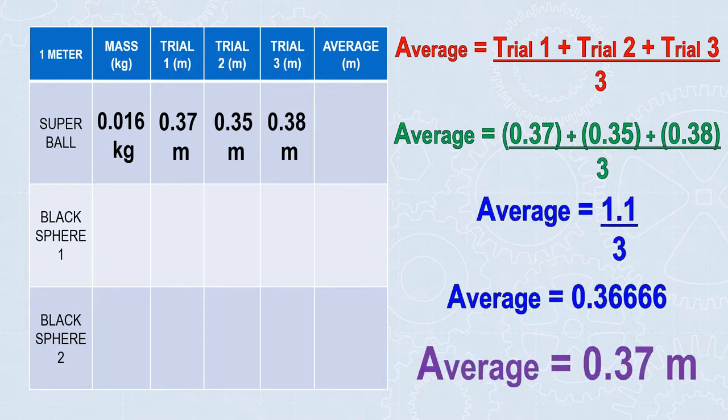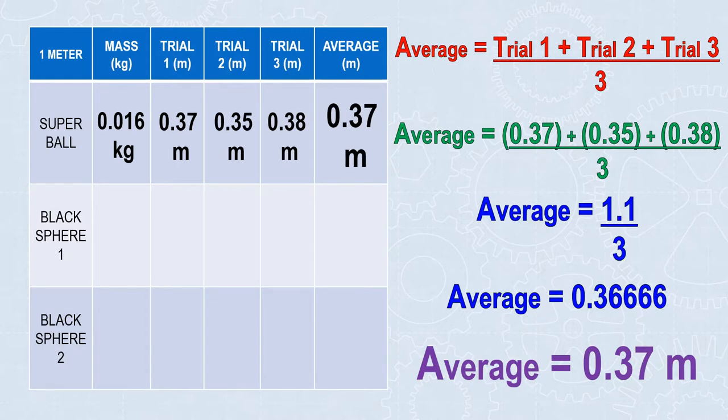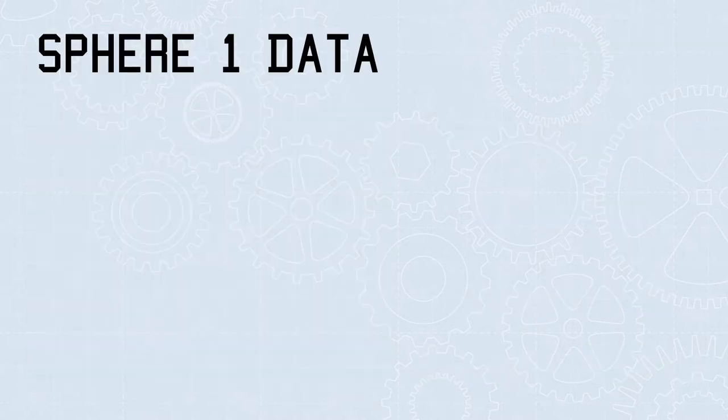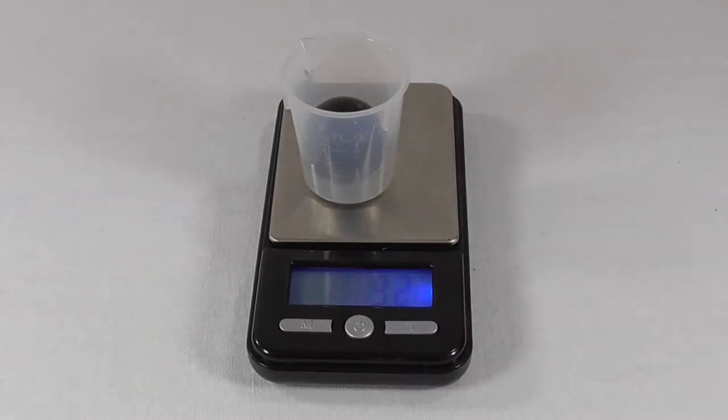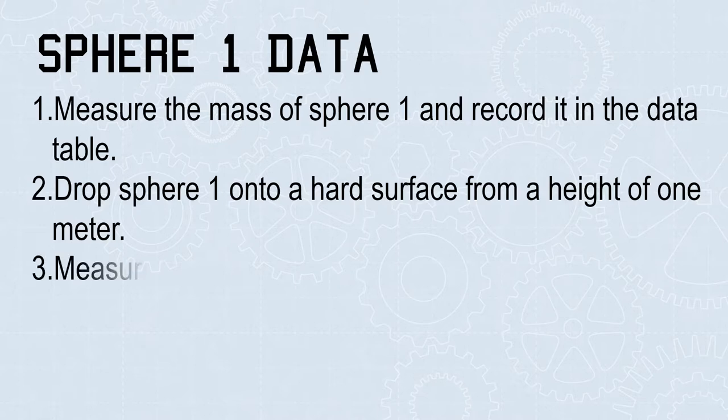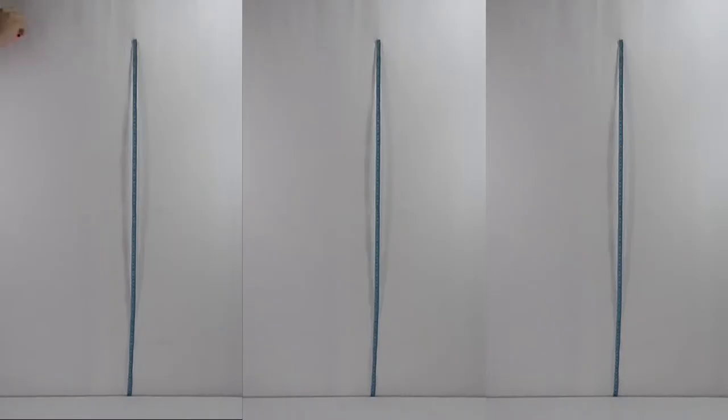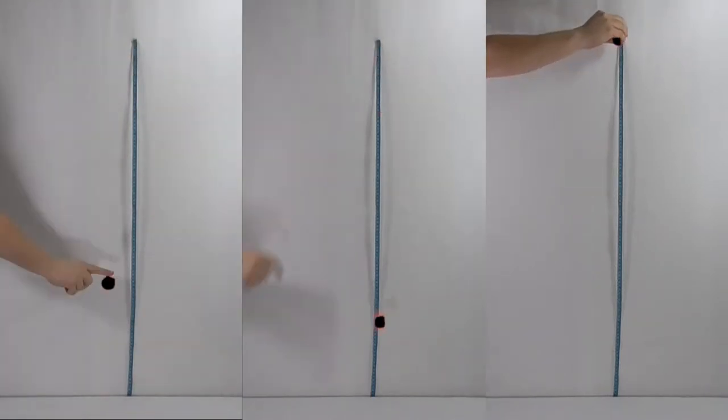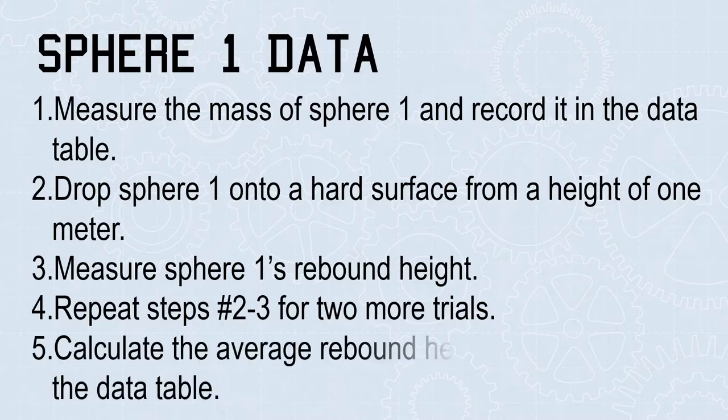For Sphere 1, you'll follow the same steps. Measure the mass of Sphere 1 and record it in the data table. Drop Sphere 1 onto a hard surface from a height of 1 meter. 3. Measure Sphere 1's rebound height. 4. Repeat those steps for two more trials. And then 5. Calculate the average rebound height and record it in the data table.